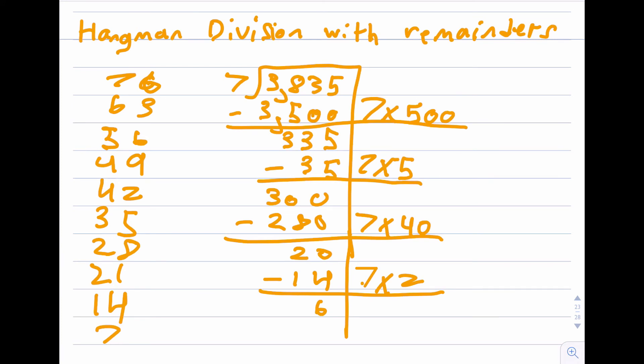Is there any way we can do 7 times something to equal 6? No, right? So that 6 is what we call a remainder. Anything that is left over is what we call a remainder. That also means that we are done with the problem.